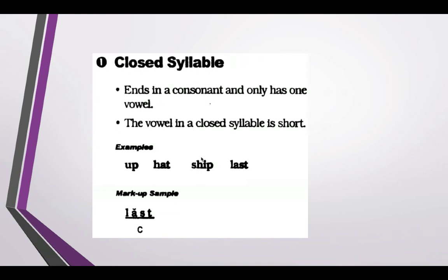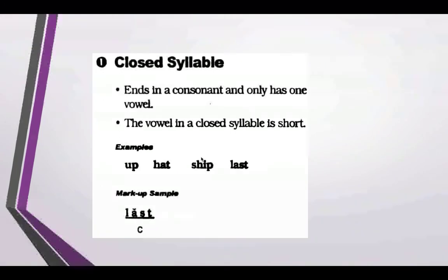There's a closed syllable. It ends in a consonant and only has one vowel — the vowel is short. Looking at words like 'up,' 'hat,' 'ship,' 'last,' the vowel sound is a short sound — it's a closed syllable. What you would do is place a little half moon above the short vowel sound, and the indication for this syllable type when marking up is a C for closed.